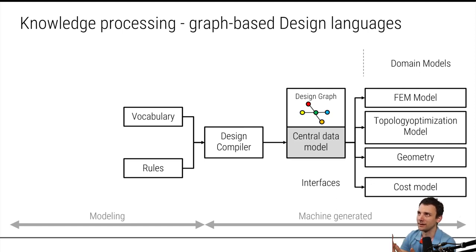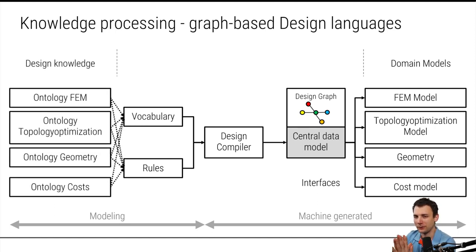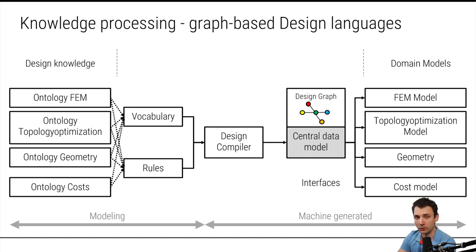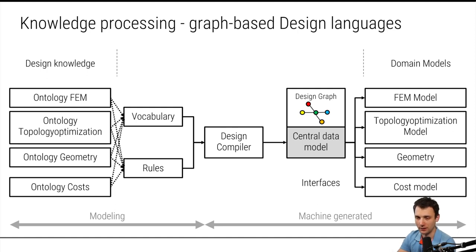Think of those ontologies on the left side just as libraries. If you know programming, you use libraries — code from other people that you can use to improve your own code. It's sort of like this here. I built, for example, an ontology for finite element methods and also for topology optimization, so new engineers can use those ontologies for their model. It's just a library — saved as design knowledge that you can reuse.